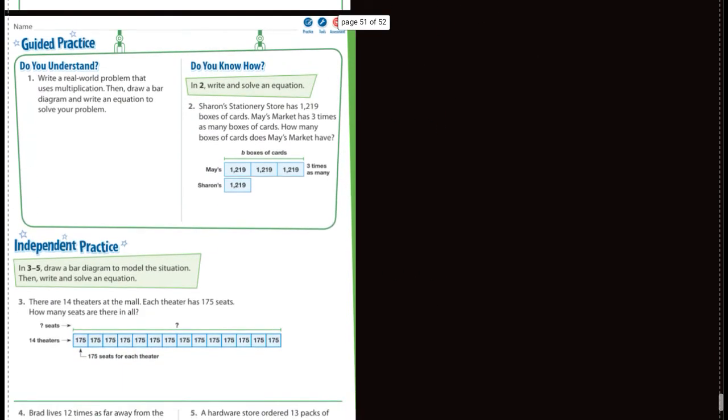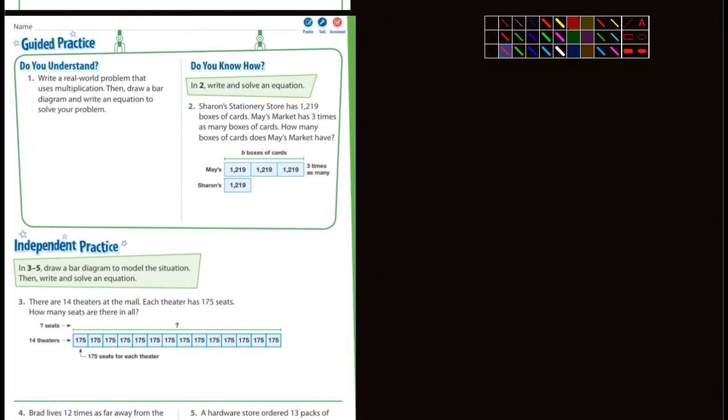Guided practice. I'm not going to do all of these for you, but I'll definitely help you guys with some. Write a real world problem that uses multiplication and then draw a bar diagram and write an equation to solve your problem. Give that a shot, you guys. I think you could do that. You can just make up your own. And don't forget to draw the bar diagram and then write the equation.